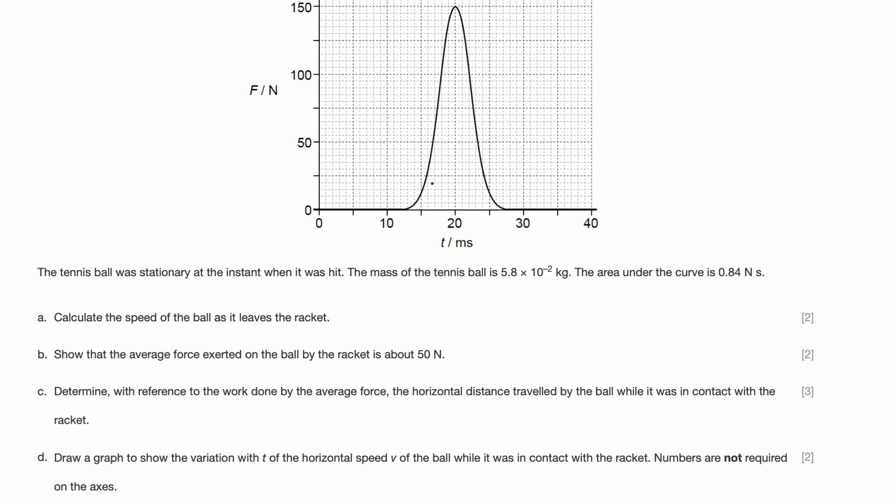They are asking us to calculate the speed of the ball as it leaves the racket. How do we solve this? Can we apply any of our Suvat equations? Well, not really because we are always missing some factor. They've given us the area under the curve so it must be useful. What does the area under the curve of a force-time graph represent? You can look at the units, Newton seconds, and you might be able to figure it out immediately, but you should be able to know that the area under the curve is actually impulse.